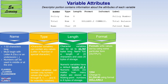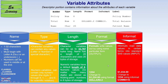The fourth attribute is format, which is used to write data values in a particular output form. For example, using the 'dollar8.2' format writes a number with a dollar sign, comma, and two decimal places. The fifth attribute is informat, which reads data values in a certain format and converts them into standard SAS values — it is used for input rather than output.